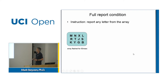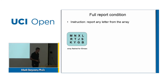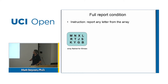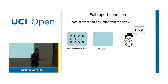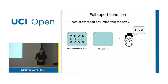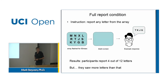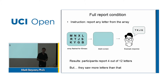In the first condition, called the full report condition, subjects see the array flashed for 50 milliseconds, followed by a blank screen, and then are instructed to recall any letter from anywhere in the array. A subject might say T, K, J, and G — that's all they got. The results show that on average, participants report four out of twelve letters — about one third.